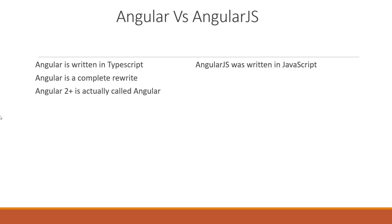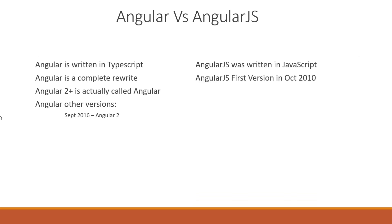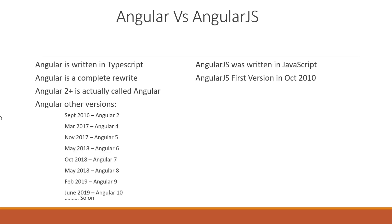There are many versions of Angular. AngularJS was introduced in 2010 while Angular came in 2016, and since then many Angular versions came every six months after its release. Currently Angular 10 is available. From Angular 2 to Angular 10, every six months you can see some versions released, and in every version they have upgraded Angular.